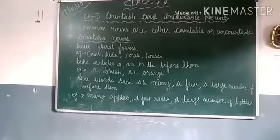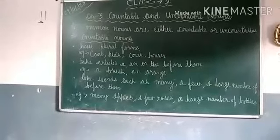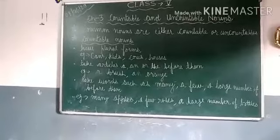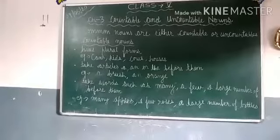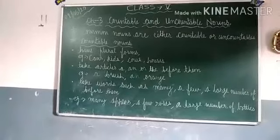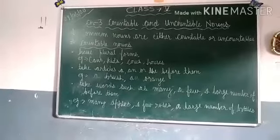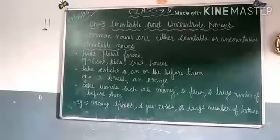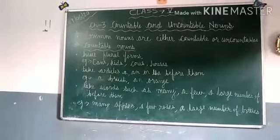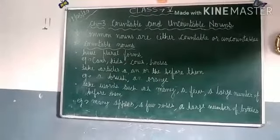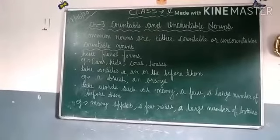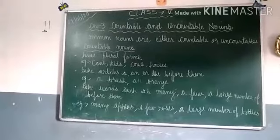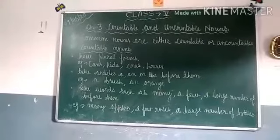Next point: countable nouns take articles — a, an, or the — before them. Jab bhi countable nouns present honge, to uske pahle article hoga. Article kya kya hoga: a, an, or the. Example: a brush, an orange.